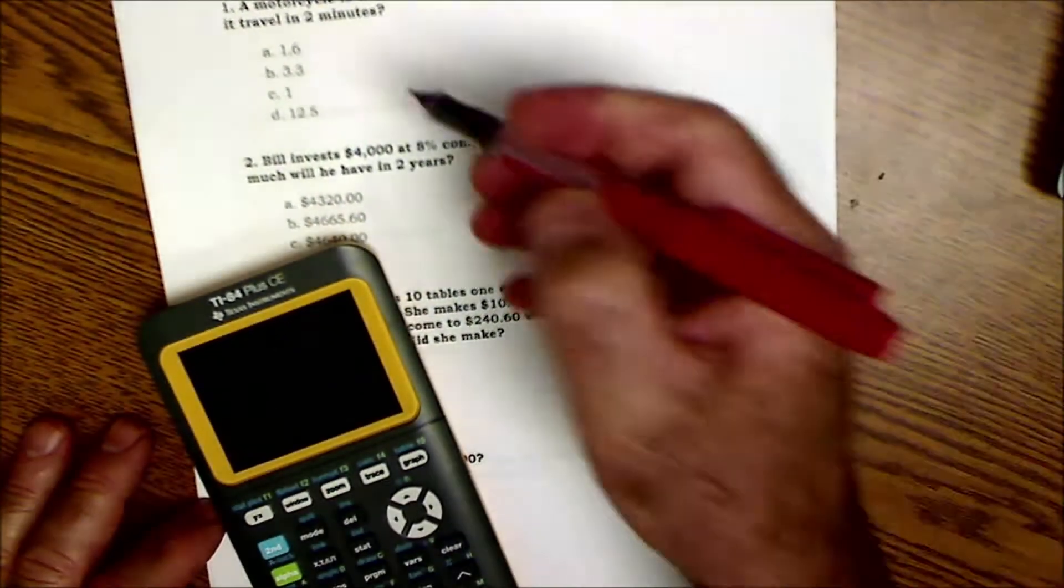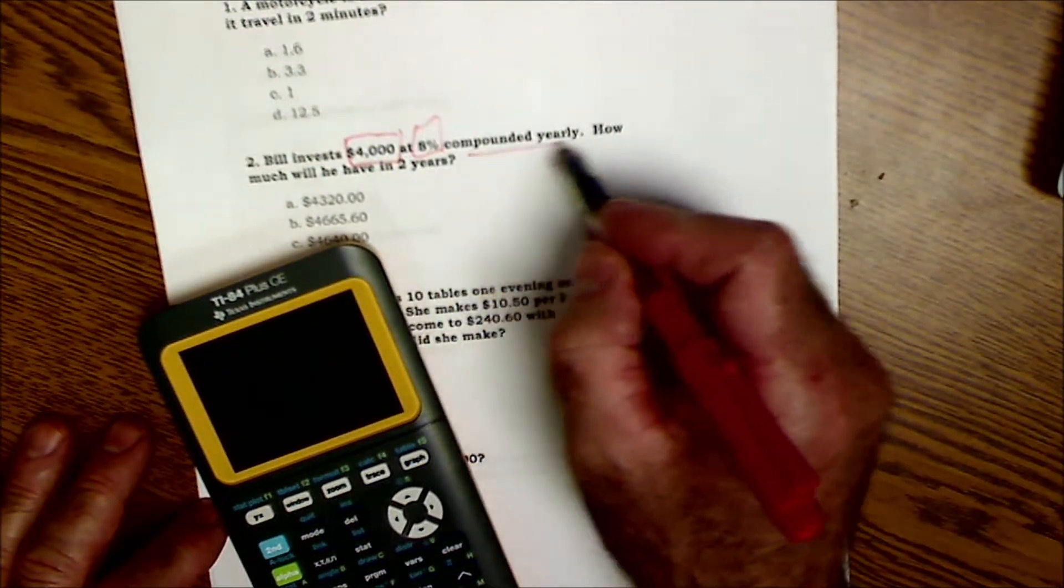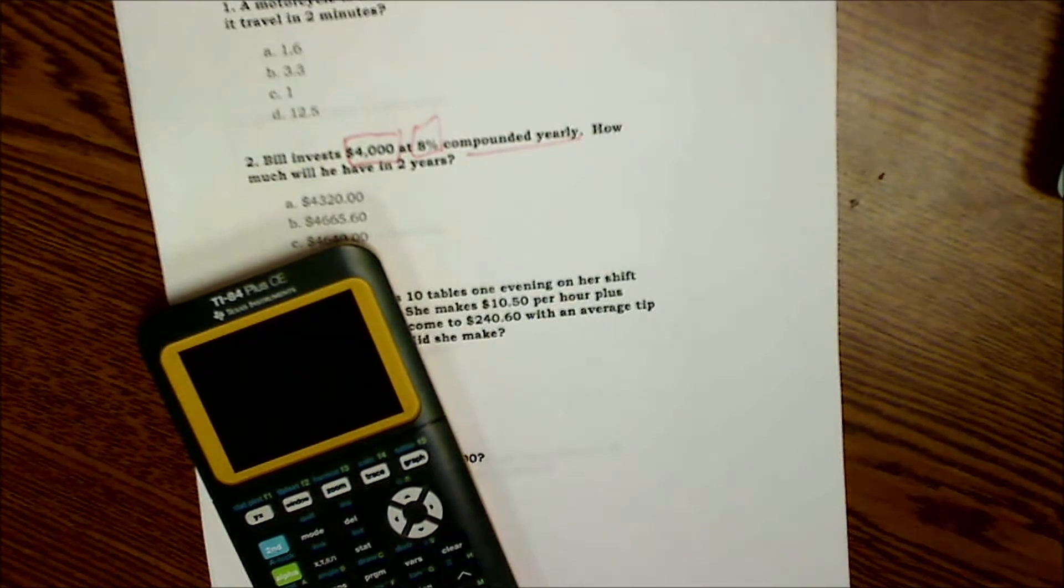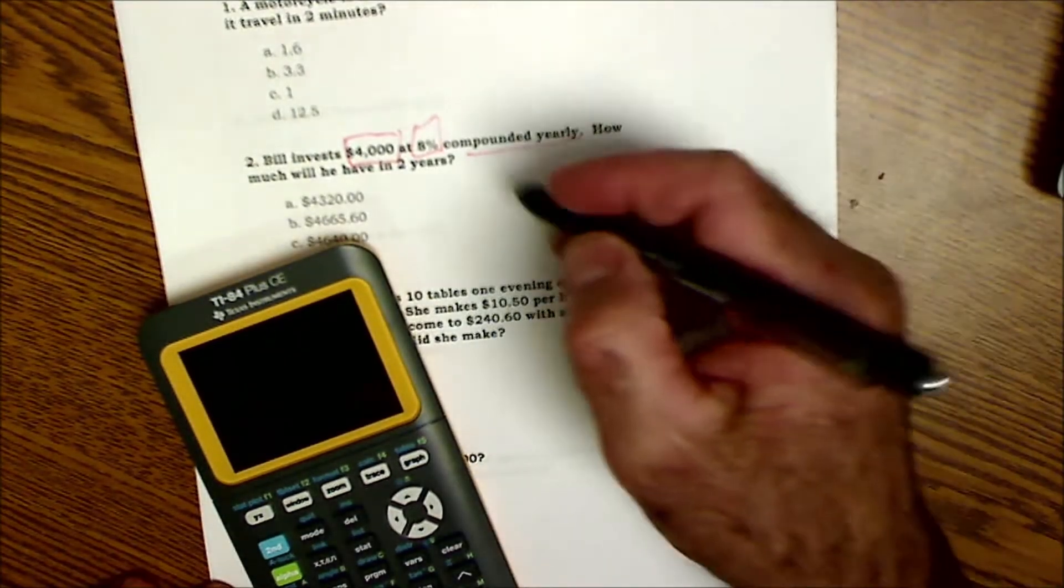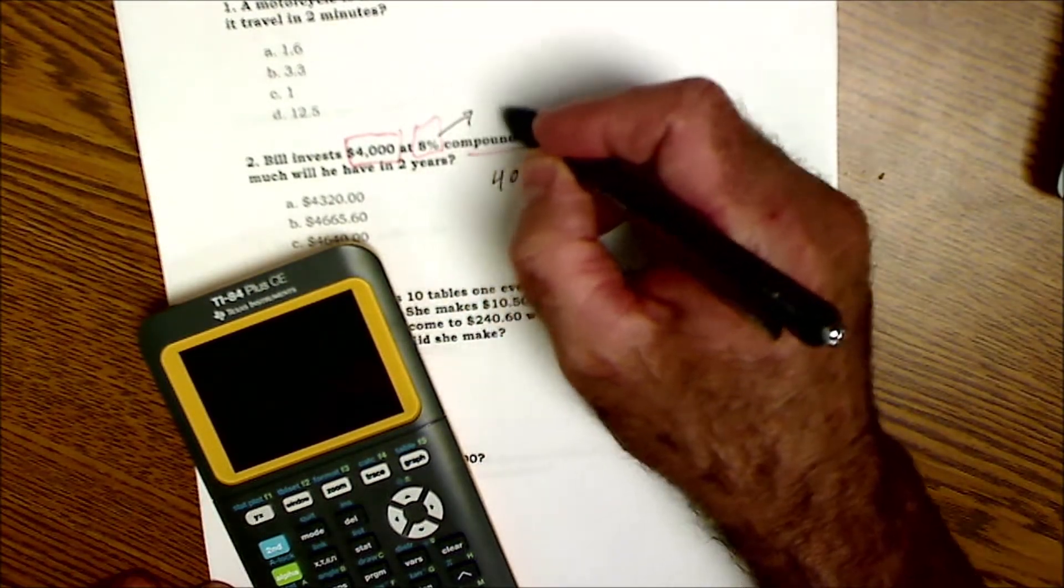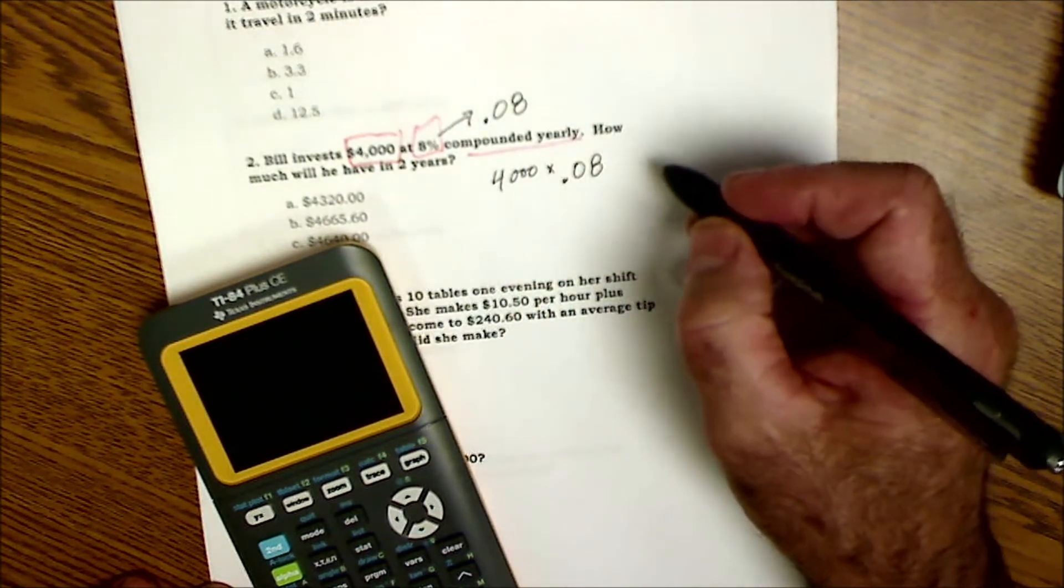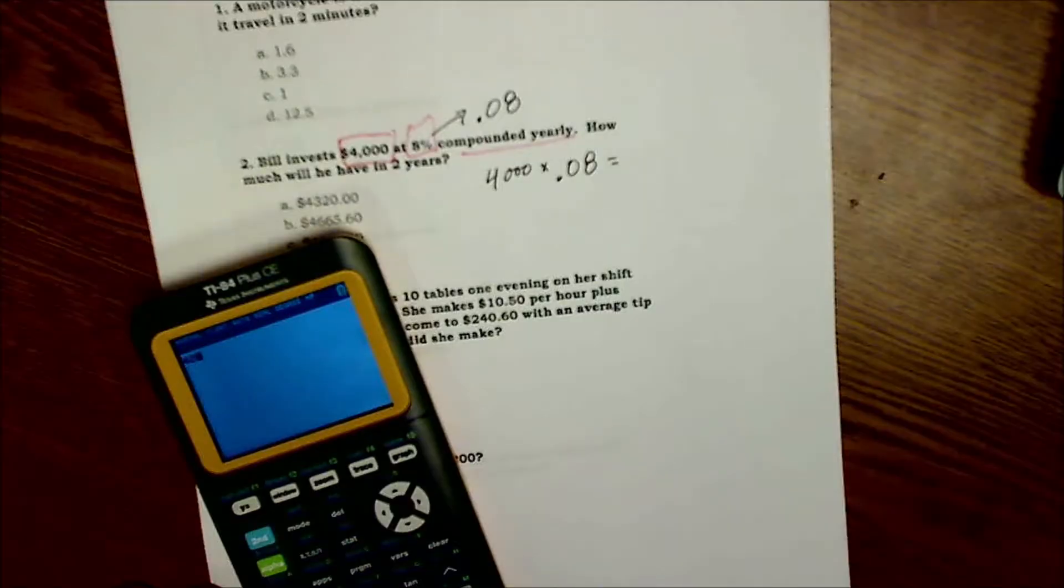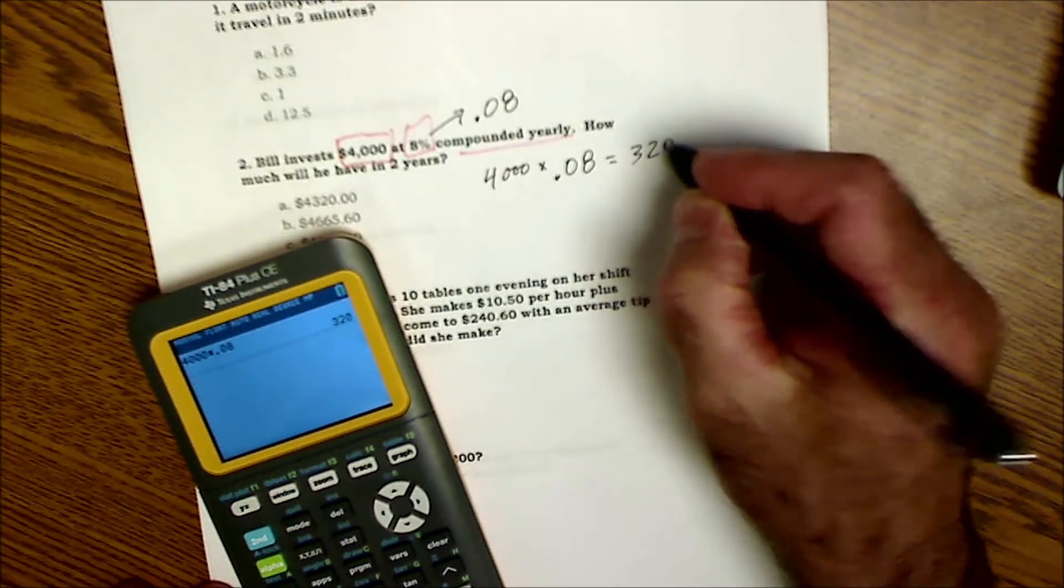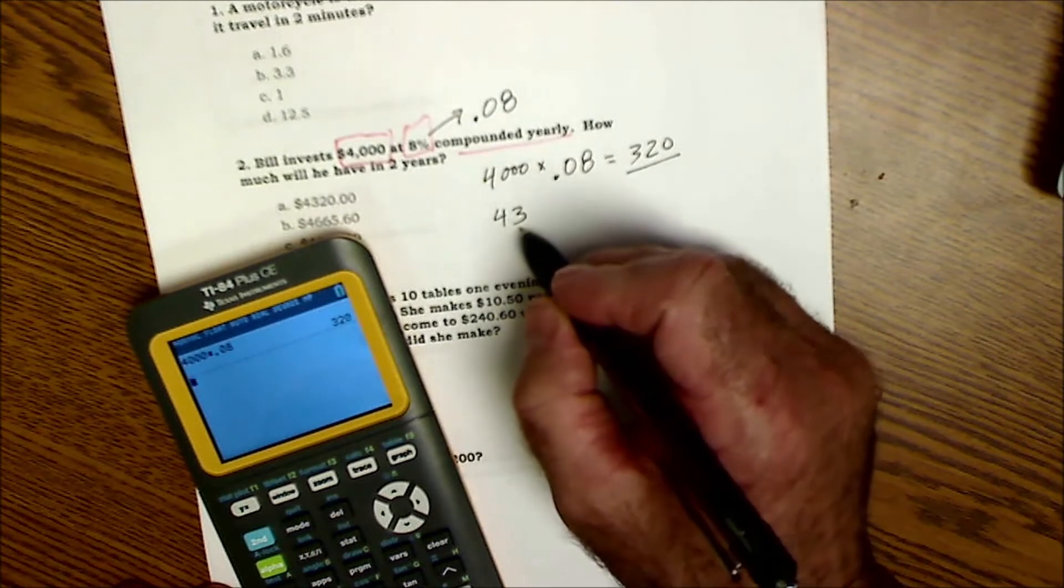Bill invests $4,000 at 8% compounded yearly, so that's important to note. When you're compounded yearly that means you earn interest on the interest. So you can take that $4,000 times the 8%, you have to convert this to a decimal 0.08, so times 0.08, and that's going to give you $4,000 times 0.08 is equal to $320. So at the end of one year you make $320 in interest, so at the end of one year you have $4,320 total.